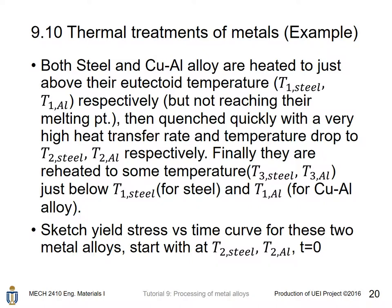Example: both steel and Cu-Al alloy are heated just above their eutectoid temperatures (T1 steel and T1 aluminum respectively), then rapidly quenched to T2 steel and T2 aluminum, and finally reheated to T3 steel and T3 aluminum — just below T1 for each alloy. Sketch the yield stress versus time curve for both, starting from T2.